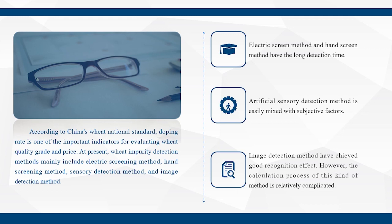Electric screen method and hand screen method have long detection time. Artificial sensory detection method is easily mixed with subjective factors. Image detection methods have achieved good recognition effect. However, the calculation process of this kind of method is relatively complicated.